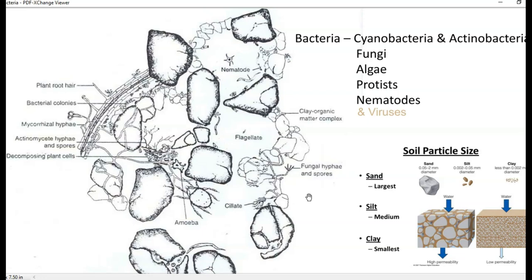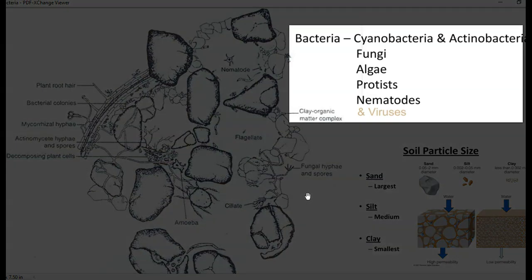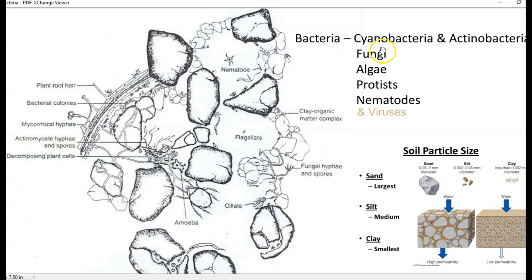If you make a cross section of the soil system it will look like this. Microorganisms present in the soil are listed on the right hand side. That is bacteria which includes cyanobacteria, actinobacteria, and all kinds of autotrophic as well as heterotrophic bacteria. Then comes fungi, algae, protists, nematodes, and viruses.